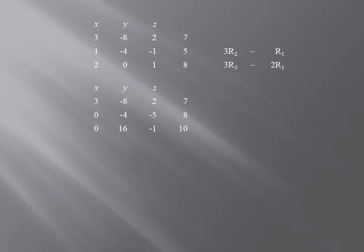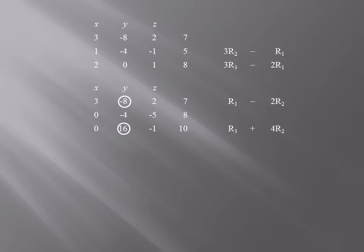We next pivot on the number in the second row, second column. We will change row 1 using row 2. Since the numbers in rows 1 and 2 have the same sign, we will subtract. The least common multiple of 8 and 4 is 8, so we simply multiply row 2 by 2. Now we change row 3 using the pivot row, row 2. The numbers 16 and negative 4 have opposite sign, so to get 0 we're going to add — multiply row 2 by 4, and that will give a 0 where the 16 is. Here's the matrix that results after pivoting on the number negative 4 in the second row, second column.